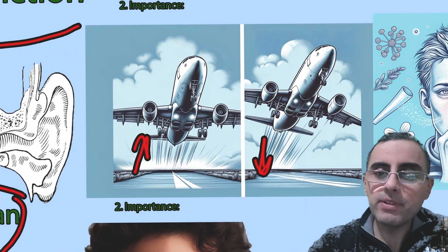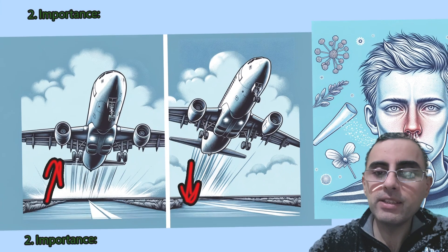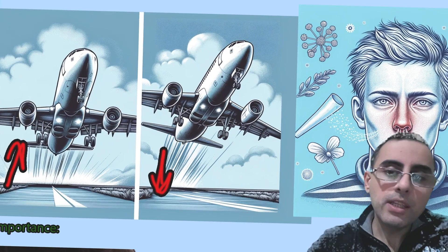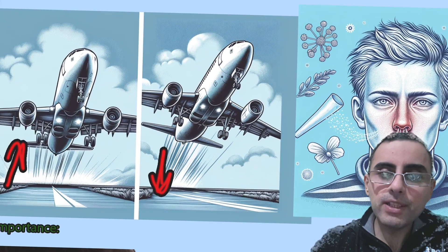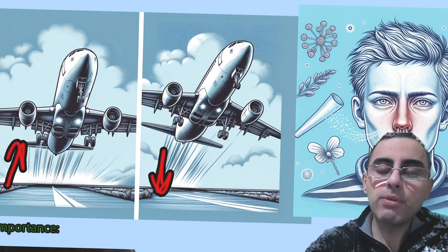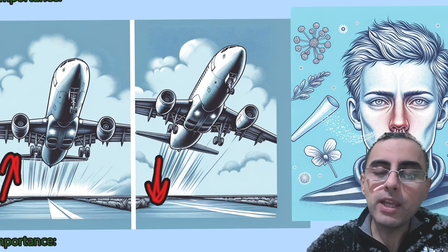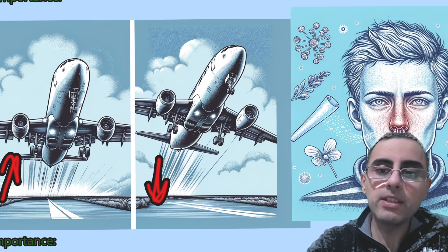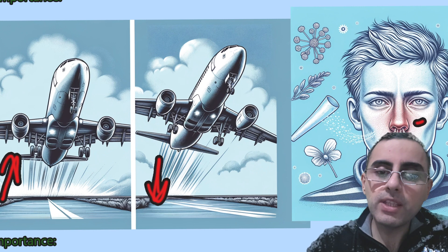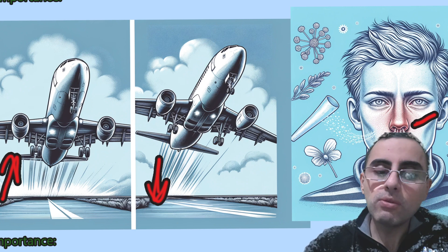Another example: if a person has allergic rhinitis and frequently complains that his nose is plugged, his ear feels full and he feels pressure in his ears — that is because the Eustachian tube is closed, causing Eustachian tube dysfunction.